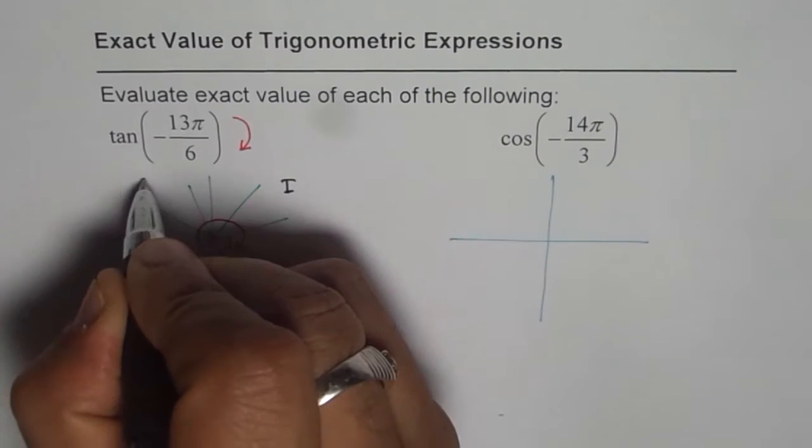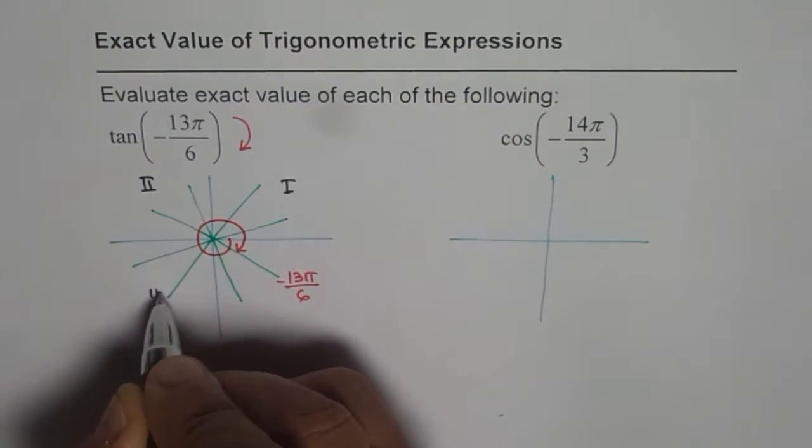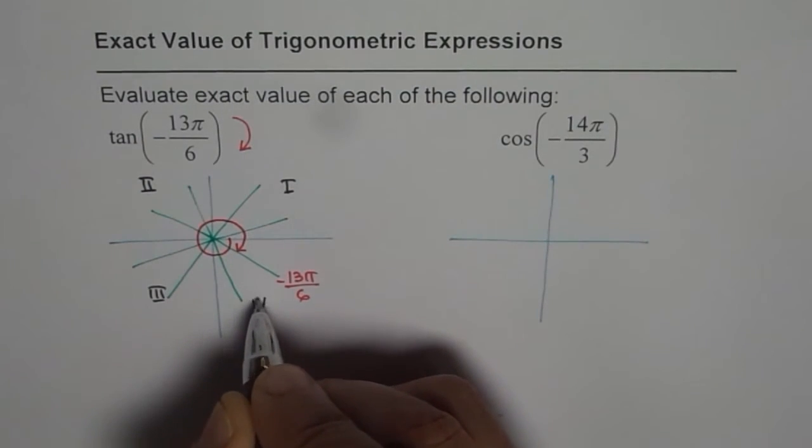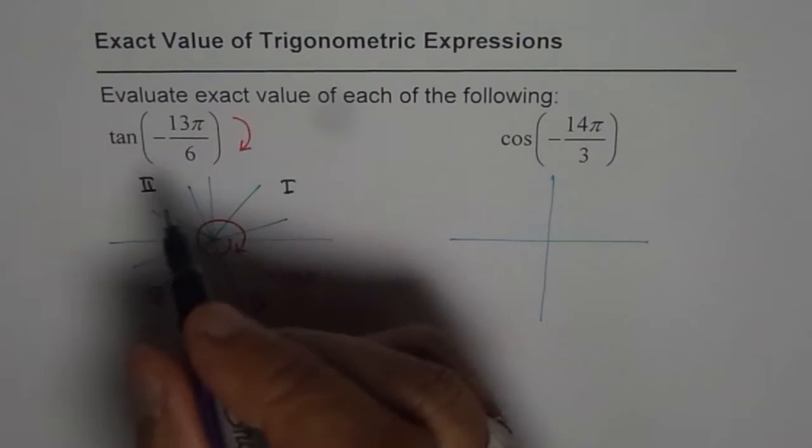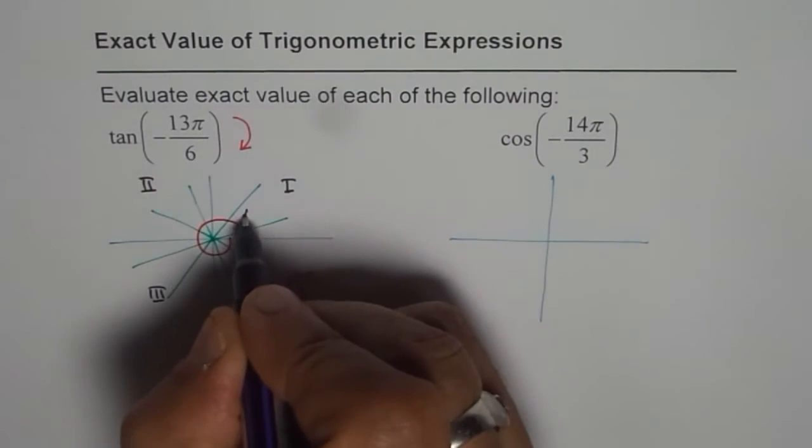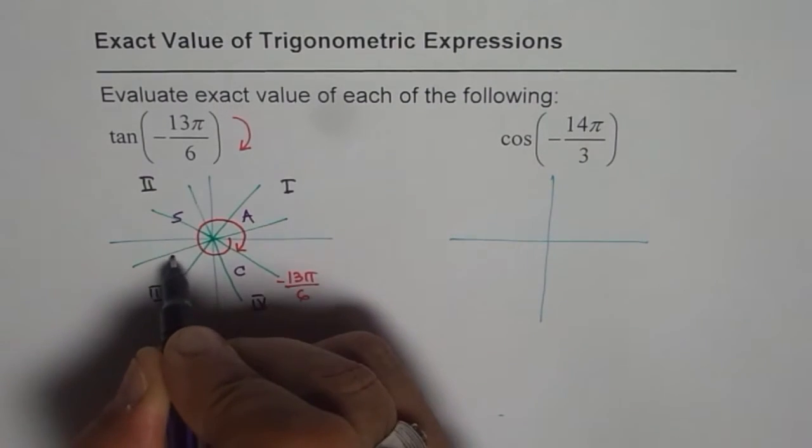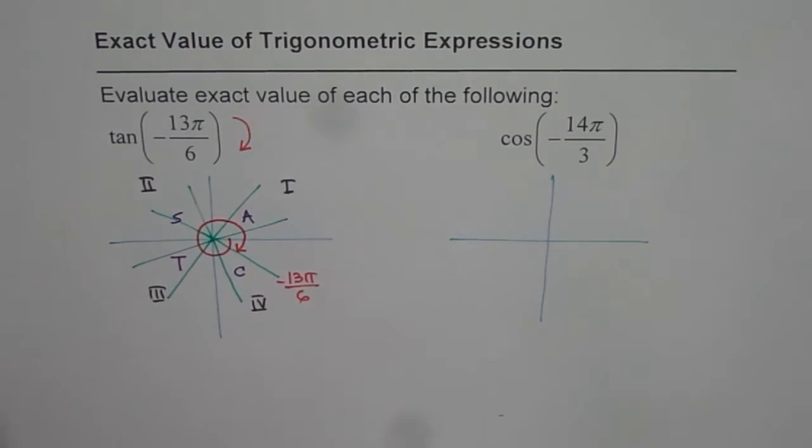This is quadrant 1, quadrant 2, quadrant 3, and quadrant 4. Apply the CAST rule: C, A, S, T.